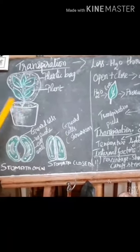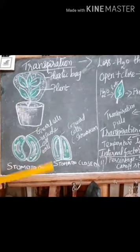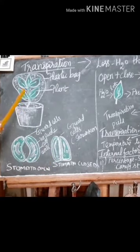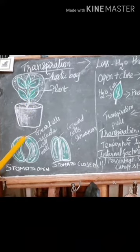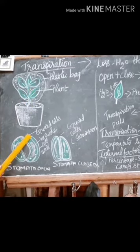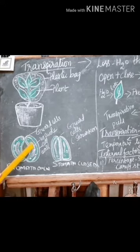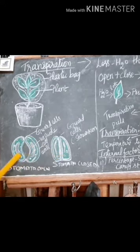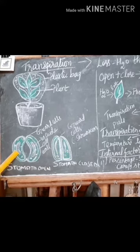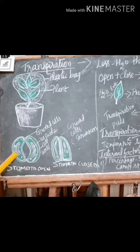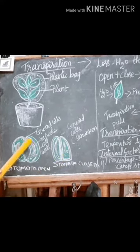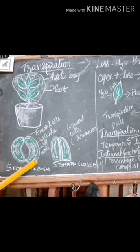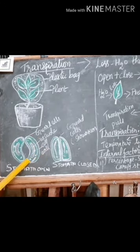Stomata are the small holes or pores present in the leaves, covered by guard cells. This is the stomata — stomata in open condition and stomata in closed condition. A vacuole is present and it is covered by a cell wall, and a nucleus is present.